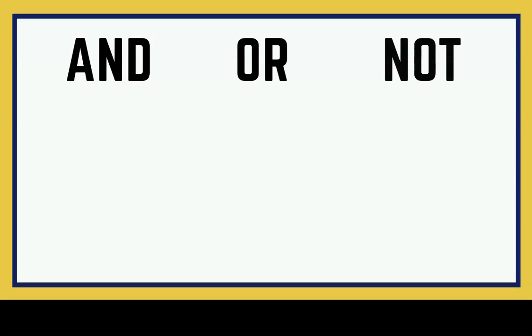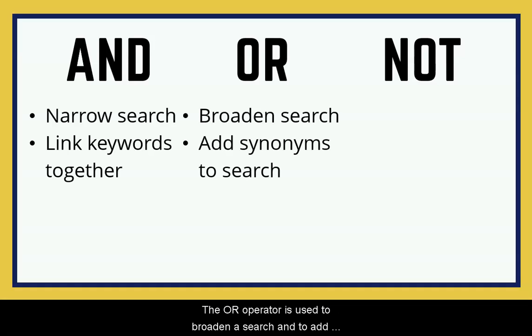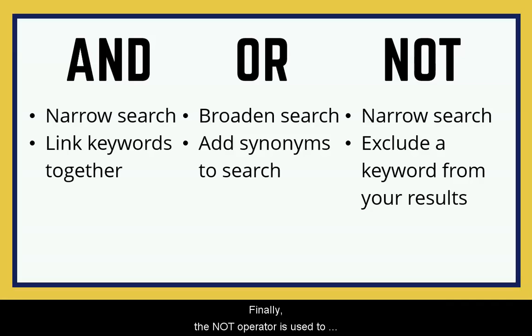To summarize, this video has talked about the use of three different Boolean operators: AND, OR, and NOT. The AND operator is used to narrow your search and to link different concepts together. The OR operator is used to broaden a search and to add synonyms to your search. Finally, the NOT operator is used to narrow your search and to exclude a keyword from your results.